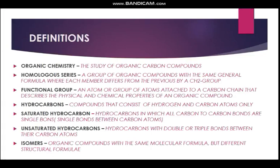A homologous series is a group of organic compounds with the same general formula, where each member differs from the previous by a CH2 group. A functional group is an atom or group of atoms attached to a carbon chain that describes the physical and chemical properties of an organic compound. Hydrocarbons are compounds that consist of hydrogen and carbon atoms only.